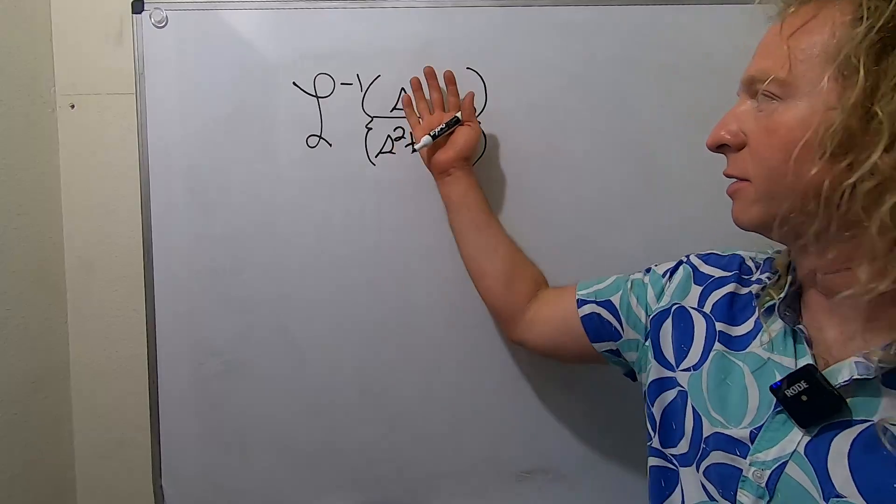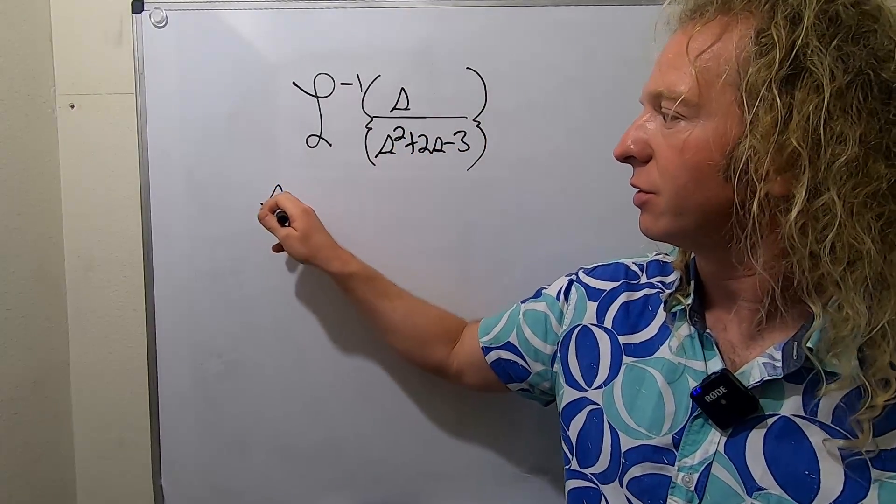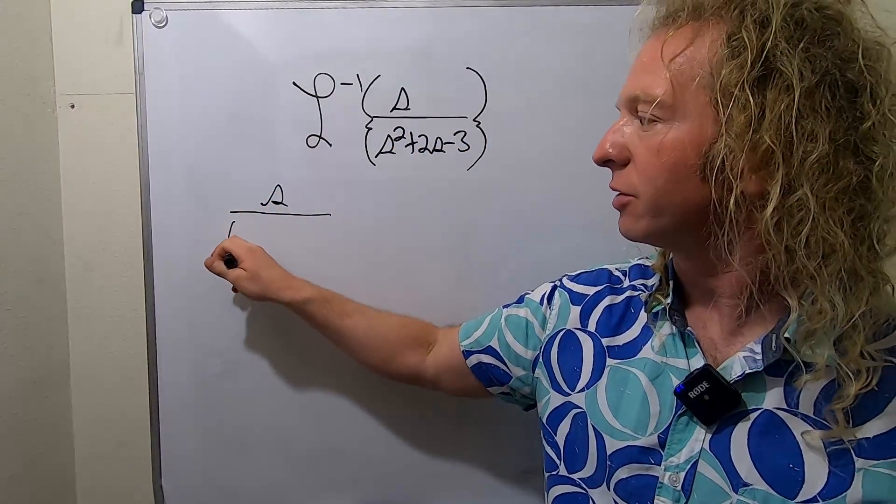So the first thing we'll do is we'll rewrite this piece here. So this is s over, and this should factor, so let's try.